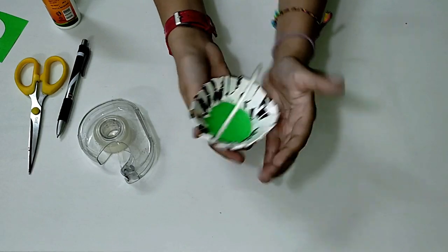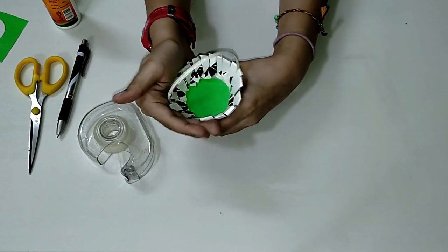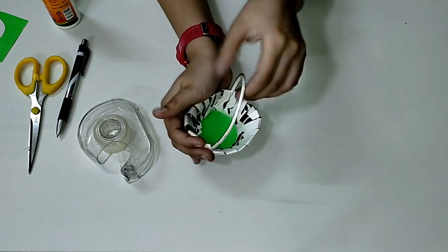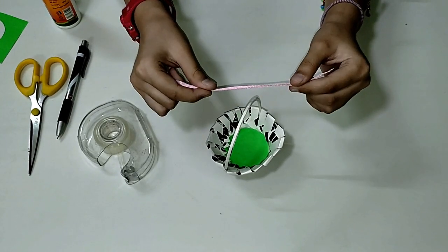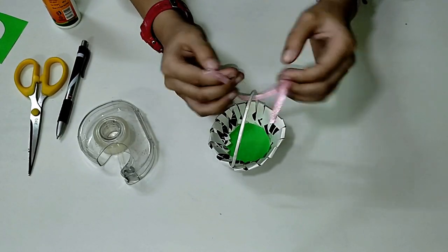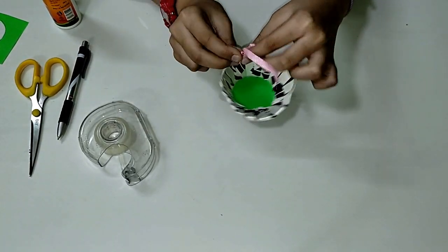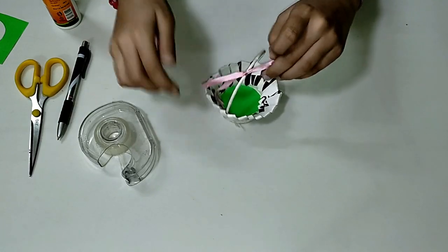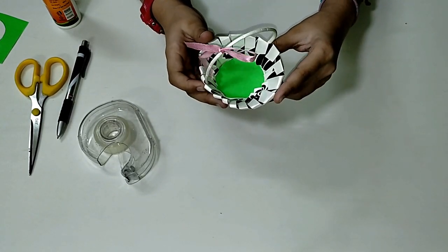Now we will just squeeze this basket a little close. And now for the very last step, we will use this ribbon to make this basket look more cute. There we go. Now the basket is ready.